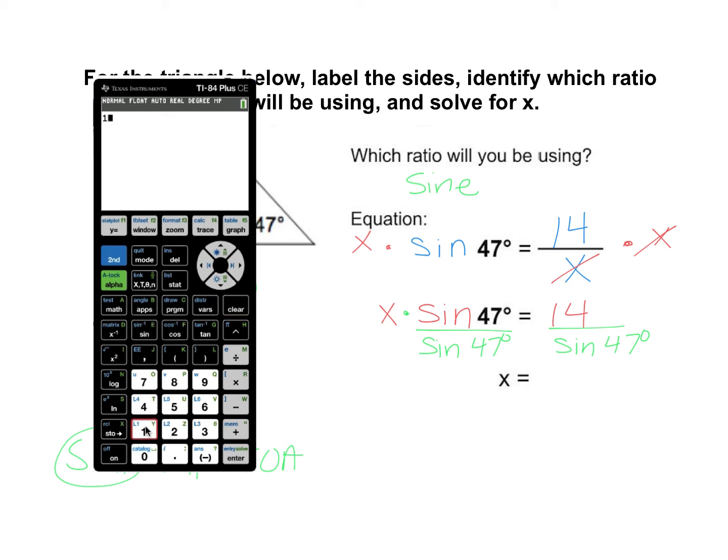All right, we have 14 divided by the sine of 47. So click the sine button right there. 47, close your parentheses, hit enter, and there is your answer. We'll round that to one decimal place, so your final answer would become 19.1.